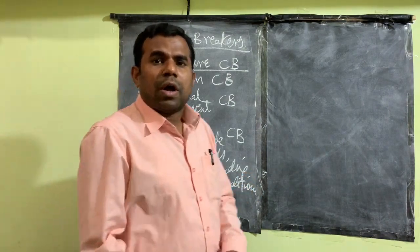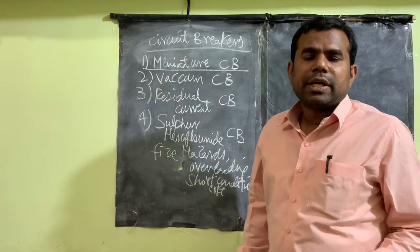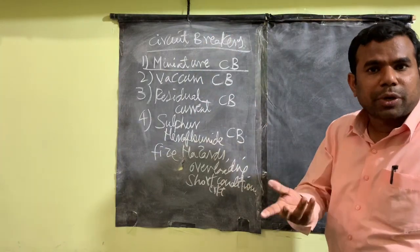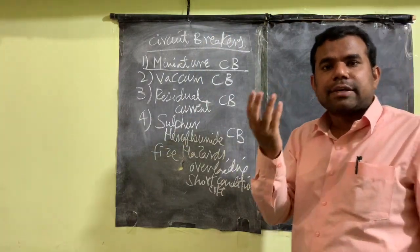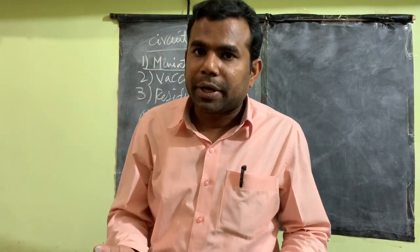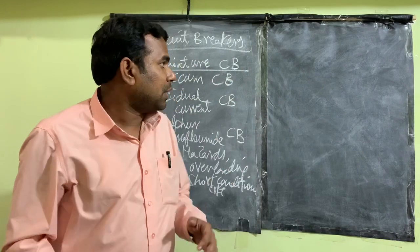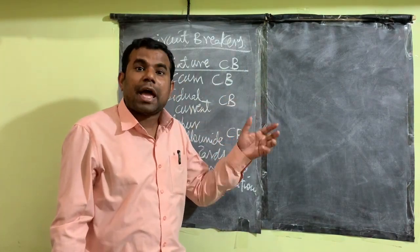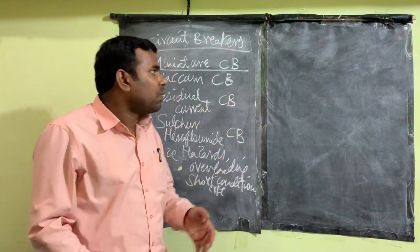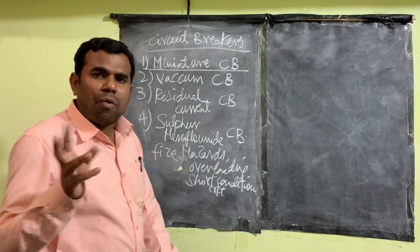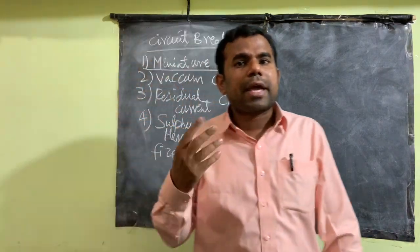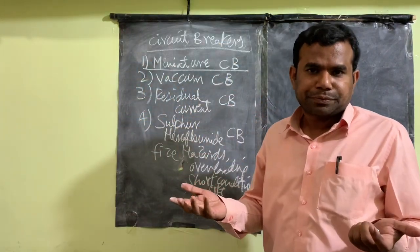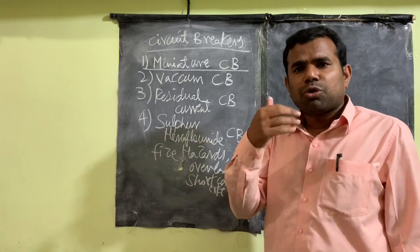Now, one important thing is that among the two types of circuit protective devices — fuse and circuit breaker — the oldest technology is the fuse, and the modern technology is the circuit breaker. Now we will make a comparison between a fuse and a circuit breaker.